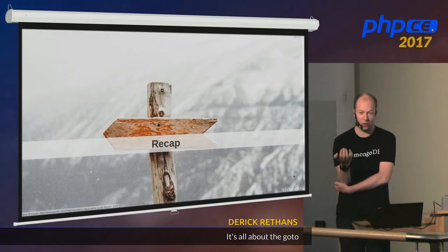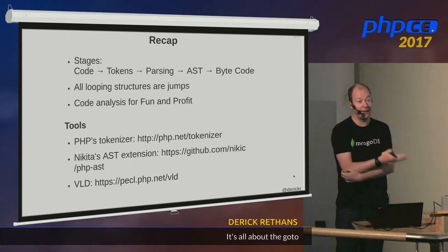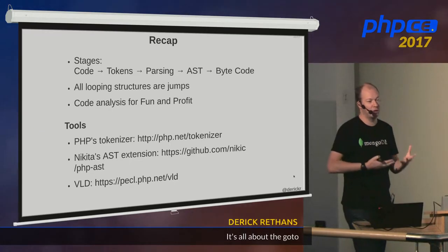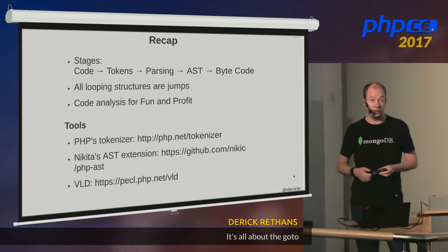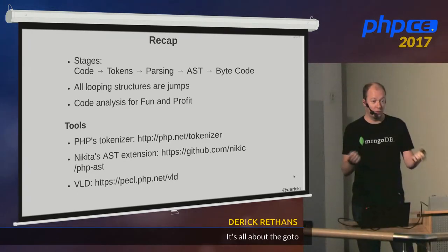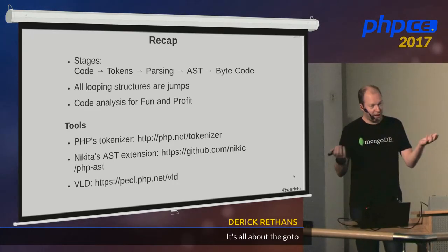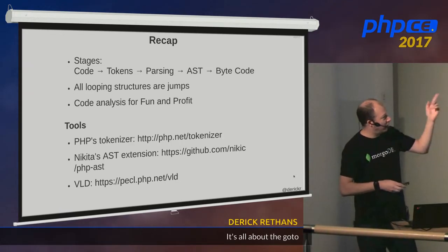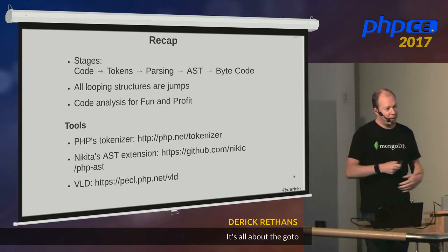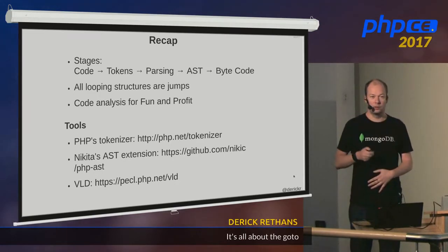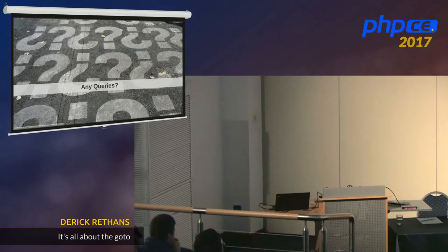Recap: we've spoken about the different stages. We go from code to tokens, from tokens with the scanner to parsing, then to the abstract syntax tree - a tree structure describing the internals of a function or file. That's converted to bytecode, the opcodes. We've had a quick look at looping structures being converted to jump-based opcodes, and a bit of code analysis for fun and profit. The extensions used are all open source with links provided in the slides.